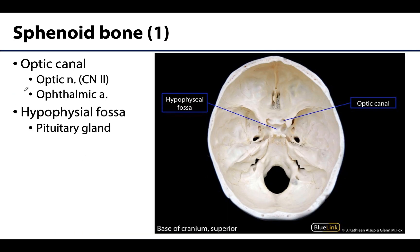A lot of the neurovascular structures of the brain exit through the sphenoid's foramina — mostly cranial nerves exiting from the brain. Starting anteriorly and working posteriorly: the two optic canals are how the optic nerve (CN II) exits this region, heading toward the orbit. If you removed the adjacent bone you'd be looking directly into the orbit. The ophthalmic artery, a branch of the internal carotid artery, also passes through this canal to enter the orbit.